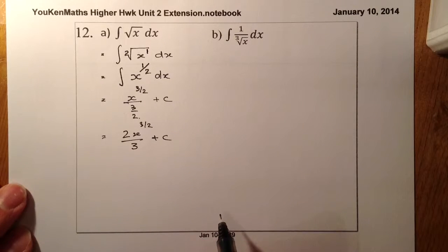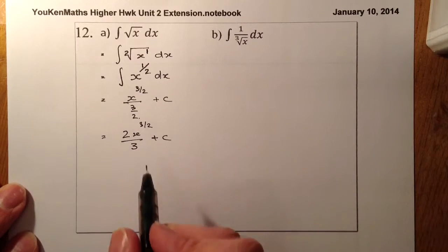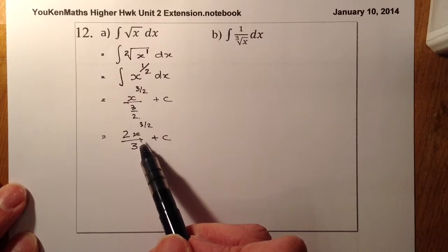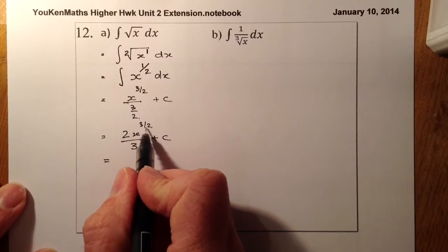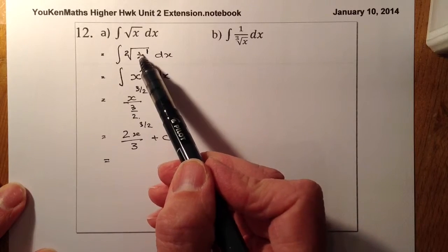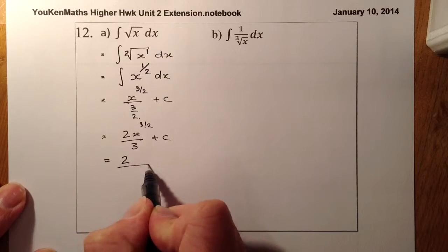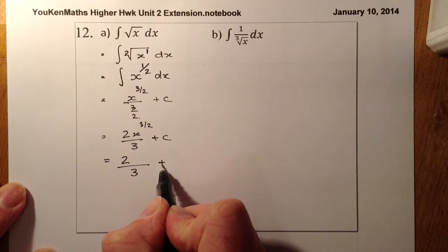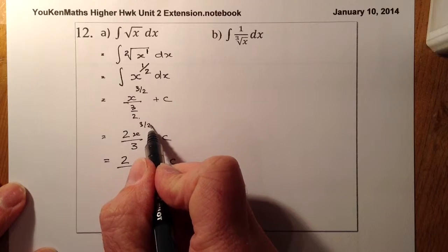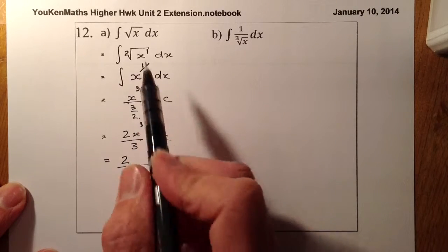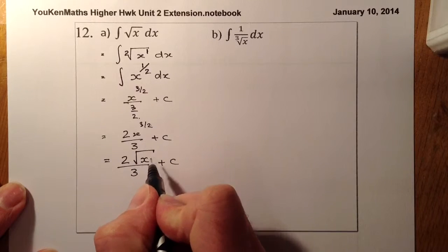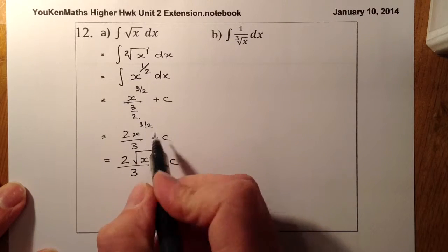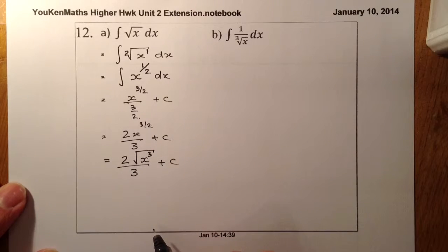And that should be my final answer. If I had to show it in surd form at the end, I would reverse what I did at the front. I have a 2 on the top, a 3 on the bottom, and plus C. The 2 on the bottom tells me it's a square root, so I'll have a square root with X in there, and that power of 3 appears inside — so that would be the question complete.